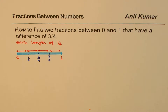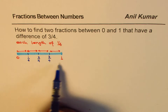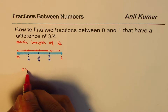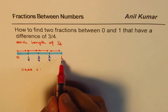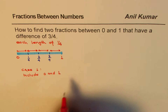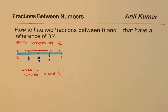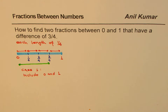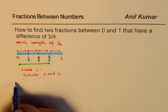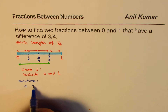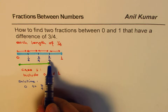Now let's answer the question. It says how to find two fractions between 0 and 1. Let me take Case 1, where 0 and 1 are included. So 0 and 1 both are included and we could take those numbers. If I start from 0, then 0 to 3 fourths — remember 0 is also a fraction. So one answer is 0 to 3 by 4. The difference is 3 fourths.